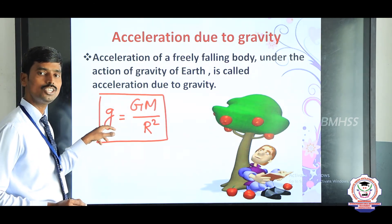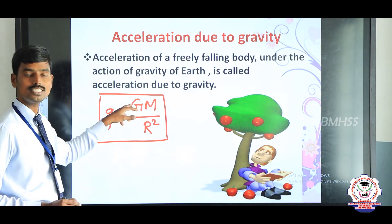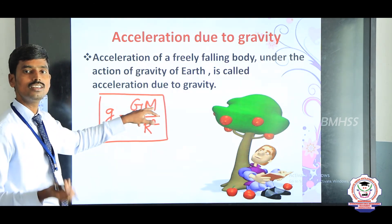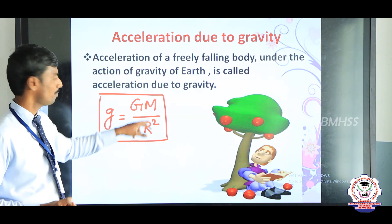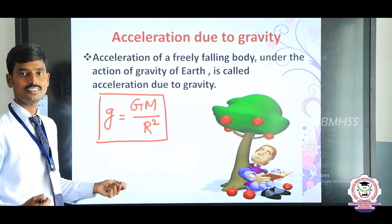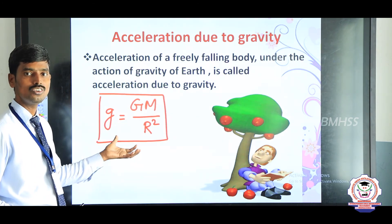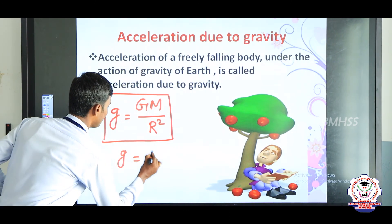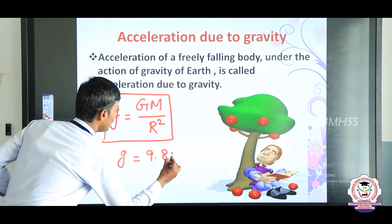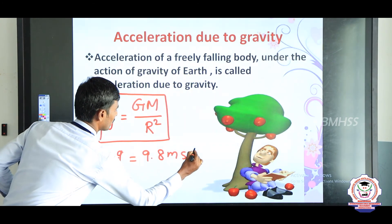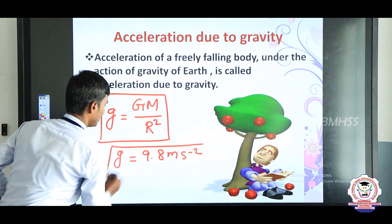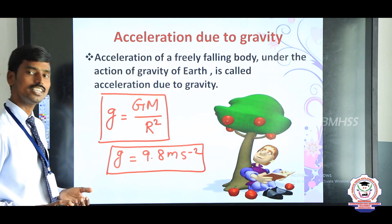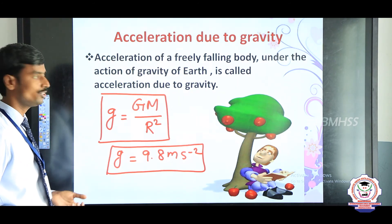Substituting the values, we get g = 9.8 meter per second square. This is the value of acceleration due to gravity — 9.8 m s⁻².